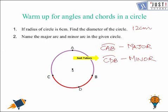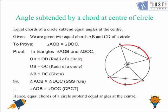Now let's begin with this topic — if you are done with the question, well done. The first property is that equal chords of a circle subtend equal angles at the center.